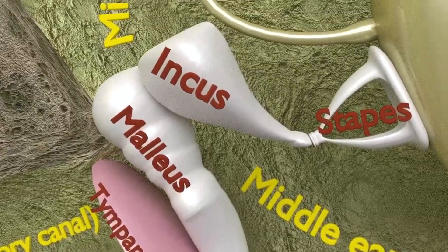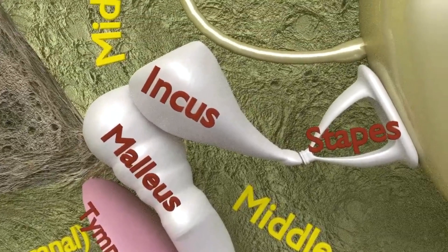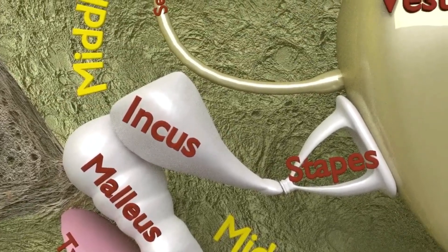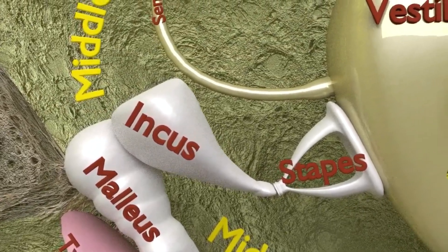The three small bones are called the malleus, the incus, and the stapes respectively, the latter being the smallest bone in the human body.